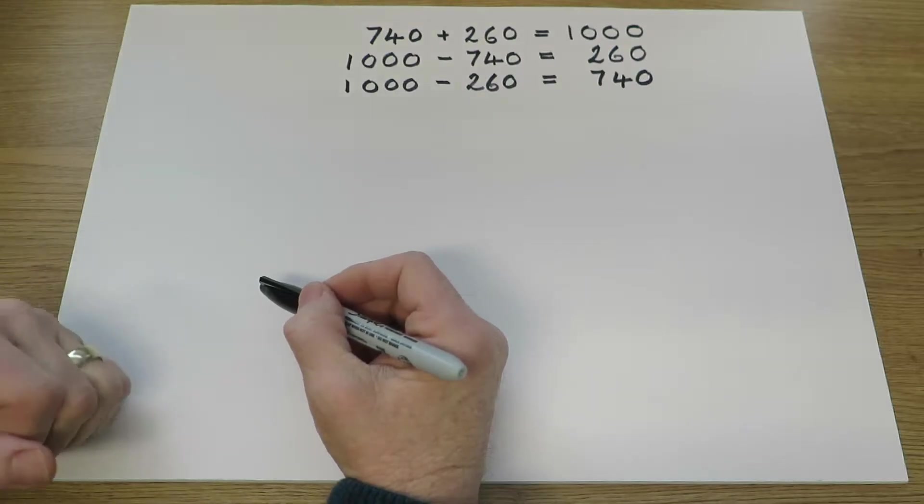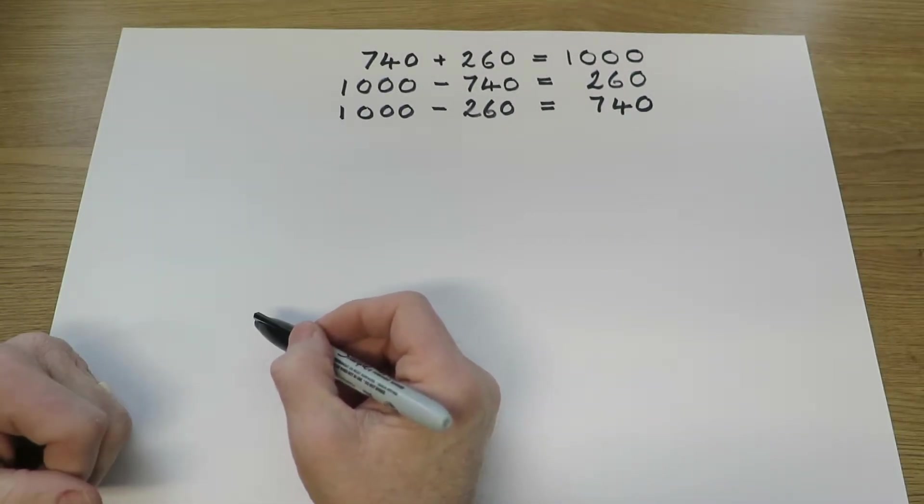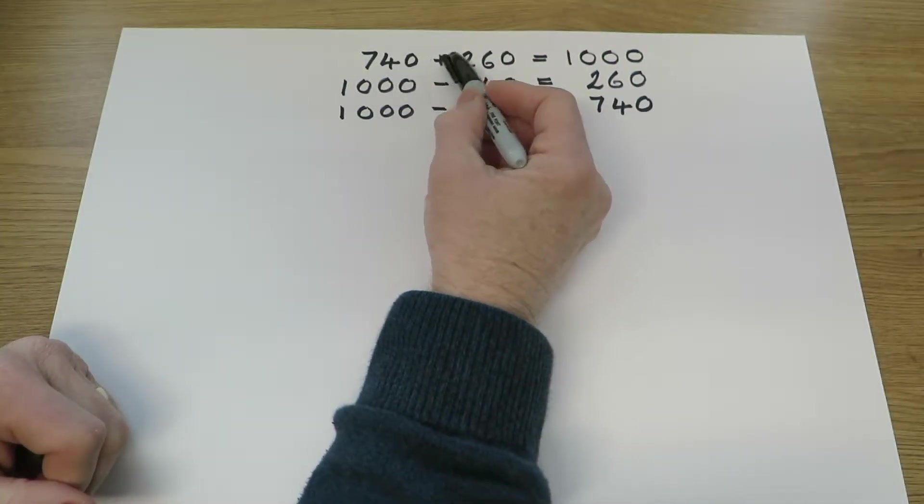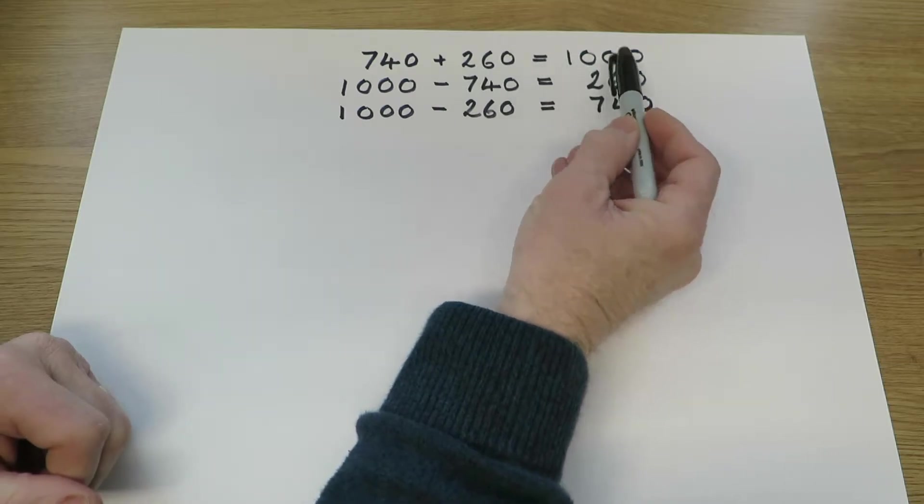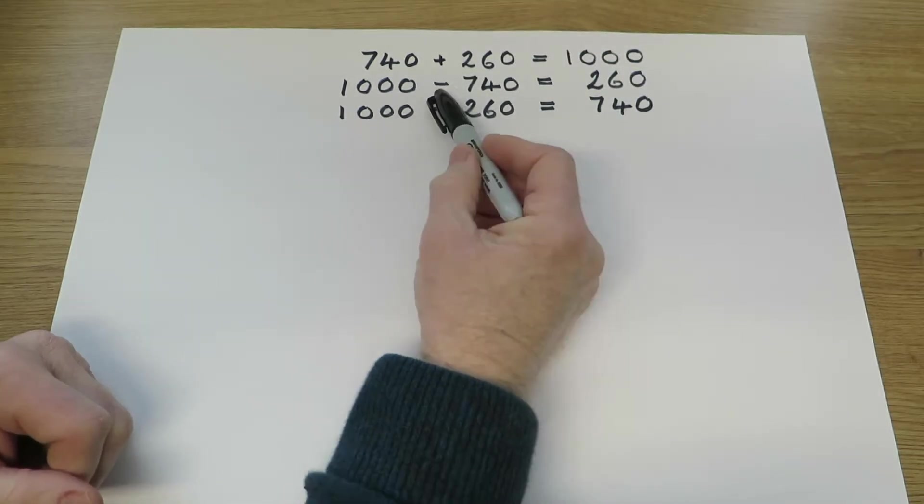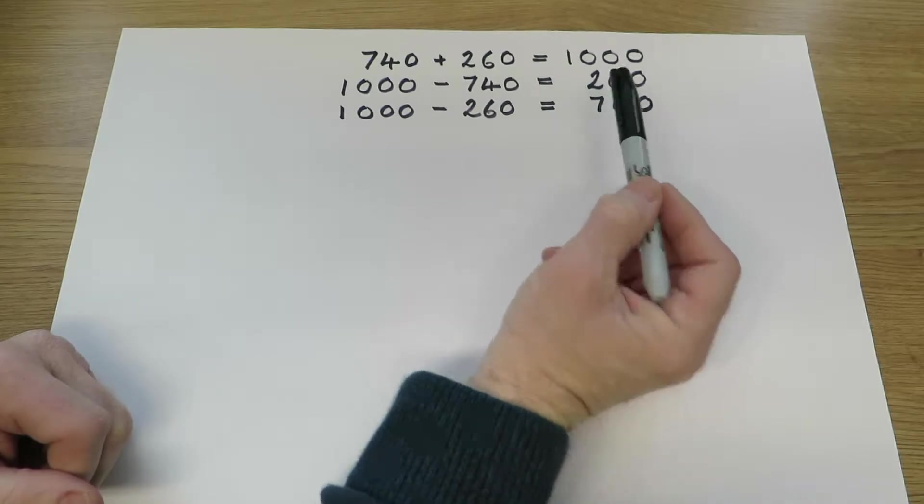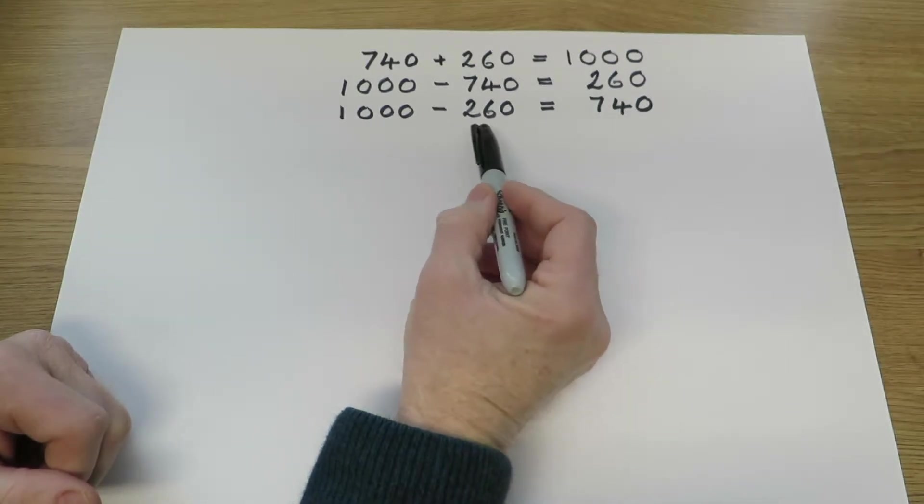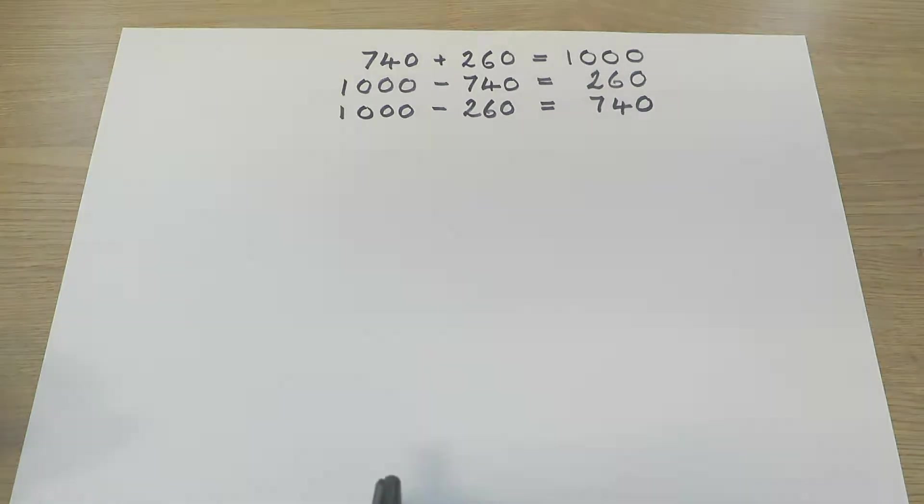Subtraction is, of course, the inverse operation of addition. So because 740 add 260 equals 1000, then 1000 take away 740 must be 260, and 1000 subtract 260 must be 740.